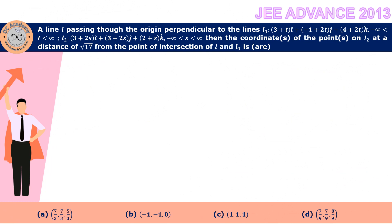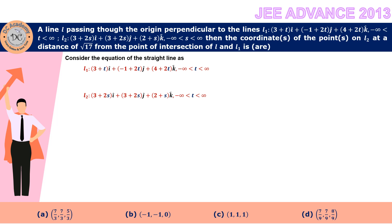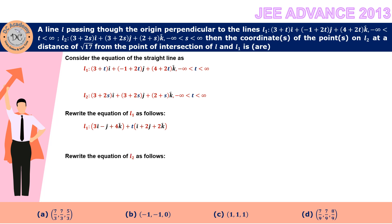Consider the equations of straight lines L1 and L2 as given. These are actually equations in parametric form. The general equation of a line passing through a vector A and parallel to a vector B is R = A + λB. So L1 is written as some vector plus T times another vector, and L2 can be written as a vector plus S times another vector.